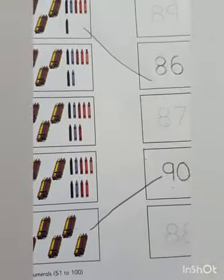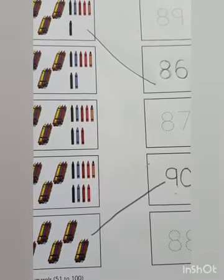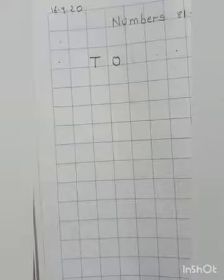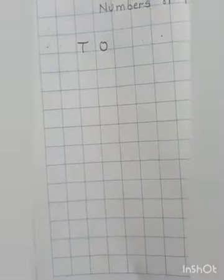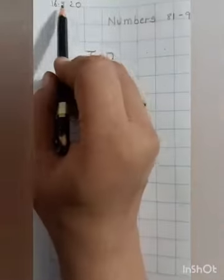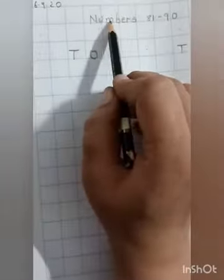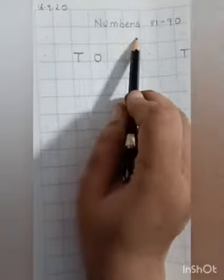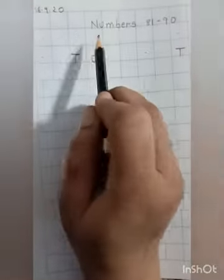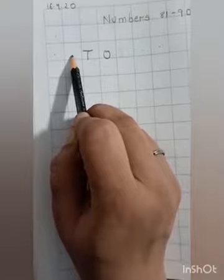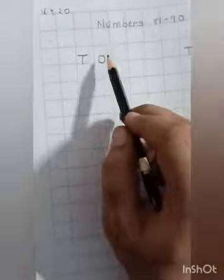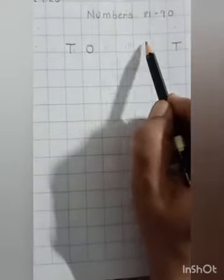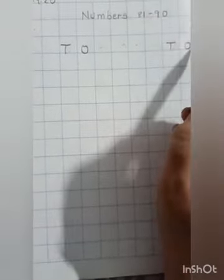Now it's time to practice writing numbers 81 to 90 in the Pencil Time math book. First write the date in the left-side corner, then write the heading: 'Numbers 81 to 90.' Leave one line — put dots to indicate skipped lines. Leave two more lines, then write 'T' for tens and 'O' for ones. After four dots indicating four lines to leave, write T and O again — we will write 81 to 90 two times.